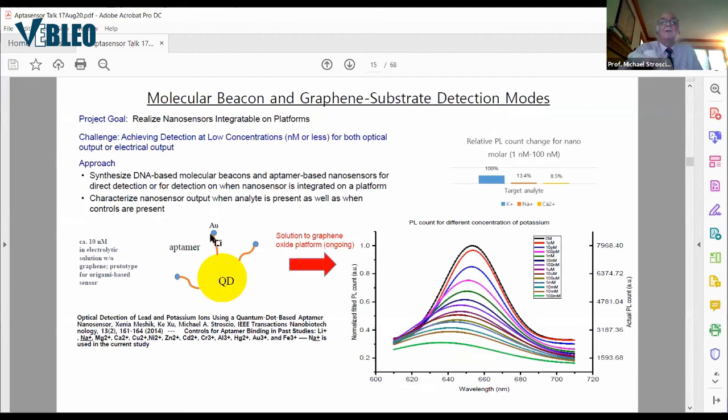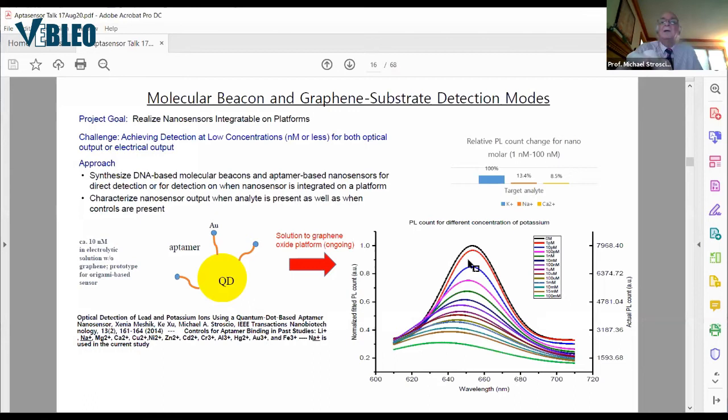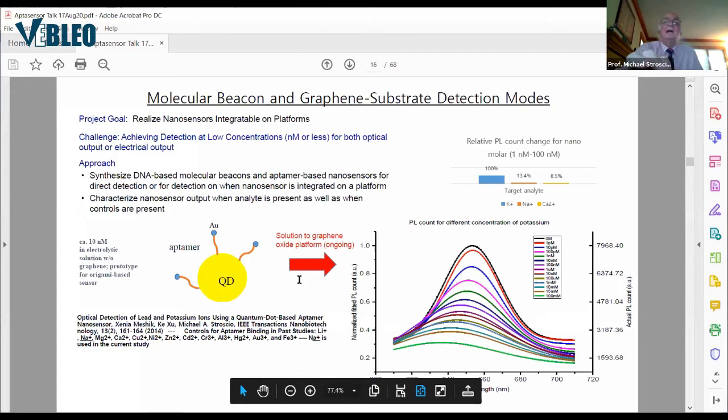This shows some of our work on detecting potassium. Here we have gold quenchers, aptamers, quantum dot. We go from zero moles to one picomole is the red signature, to 100 millimolar, and you can see, as you increase the concentration, the fluorescence decreases. These can serve as a calibration curve, and then you can detect the concentration of your analyte. In this case, it's potassium.